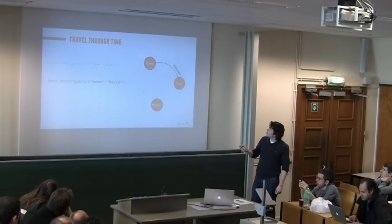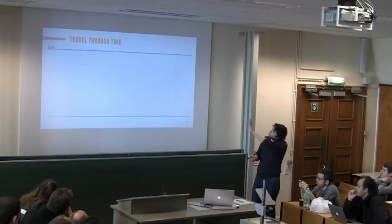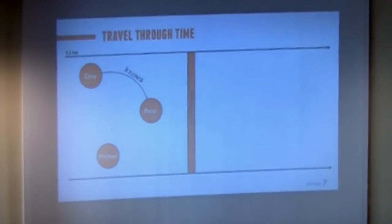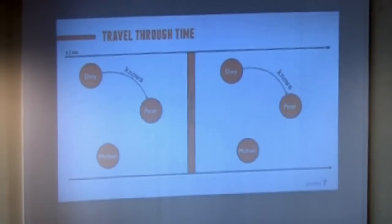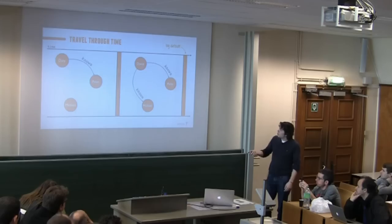Then we do some changes. On one hand I rename myself to David, and then I also add an edge from David to Michael. If you look at that on a timeline, you get something like this: first we had the original graph, then we have the checkpoint, and then we have some changes - Davy became David and we added that edge. That's basically the current situation in our graph. If you would choose Neo4j or any type of graph database, you would basically be querying here - this is the default point if you do any query.